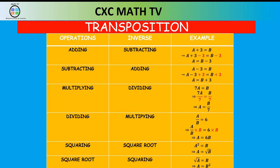When squaring a number, in order to get rid of the square we have to square root. So A squared equals B means we square root both sides and A equals the square root of B. And if you're square rooting a number — for example the square root of A equals B — we have to square both sides to get rid of the square root. All of this we're going to put into practice.